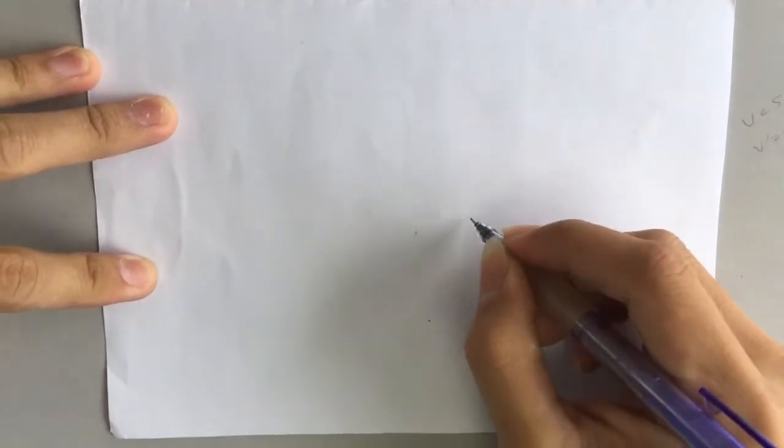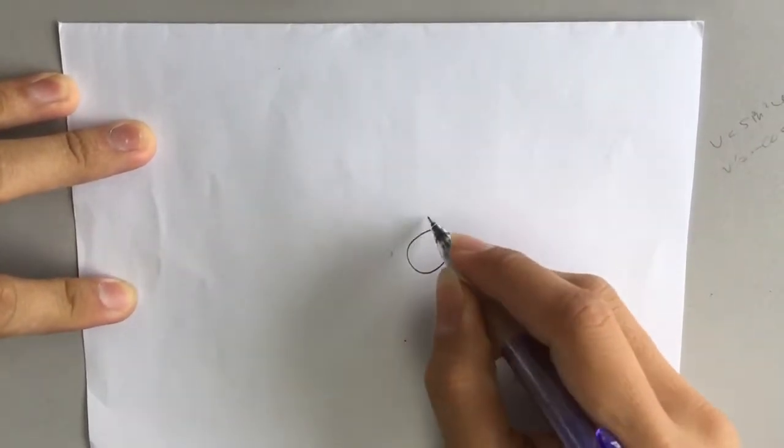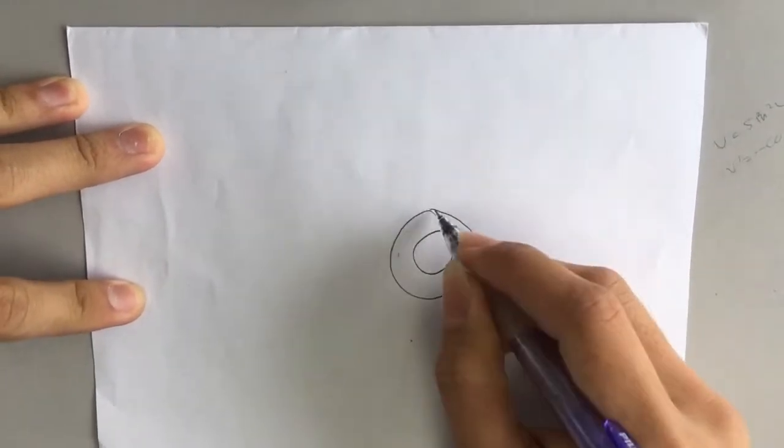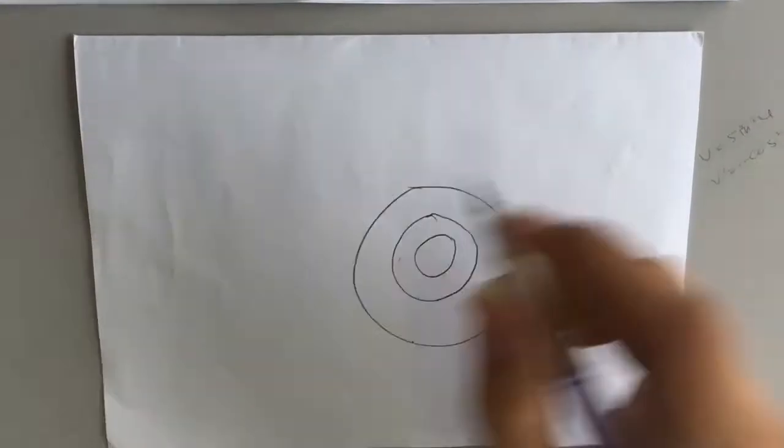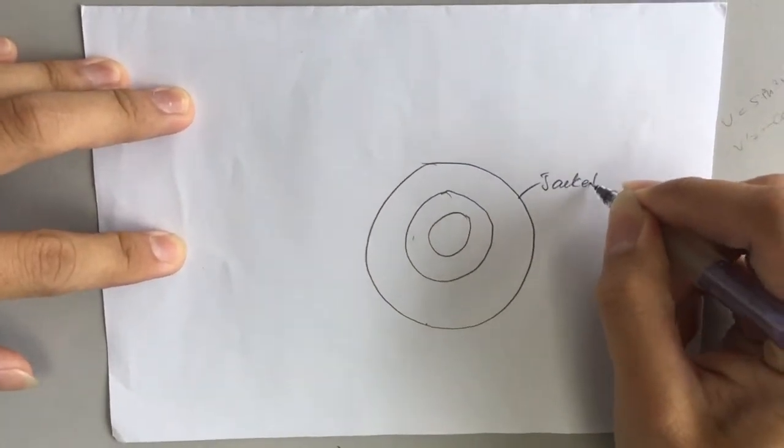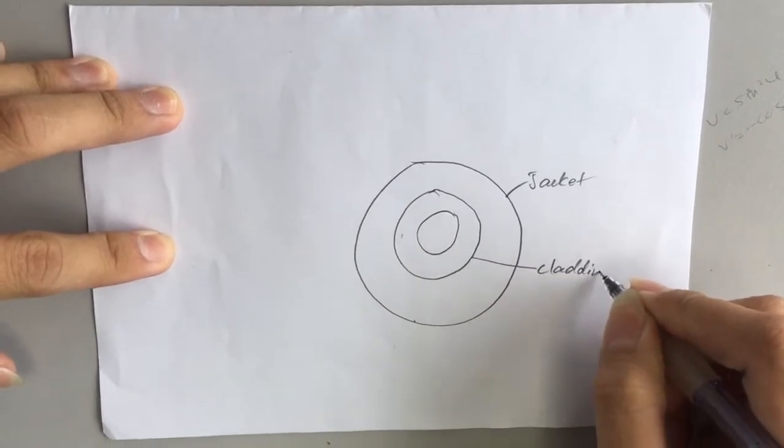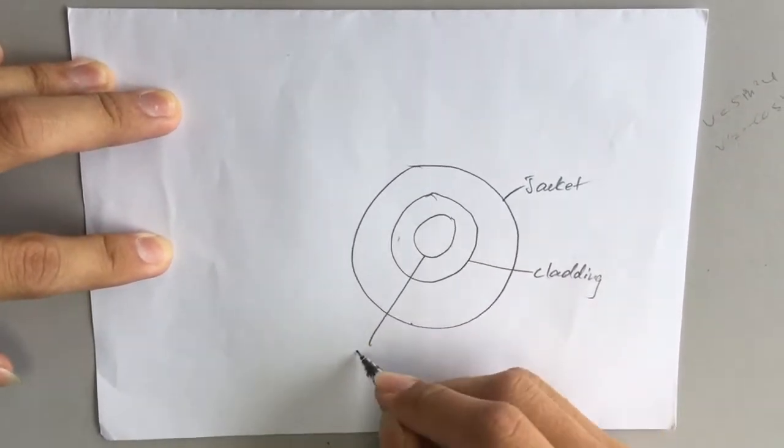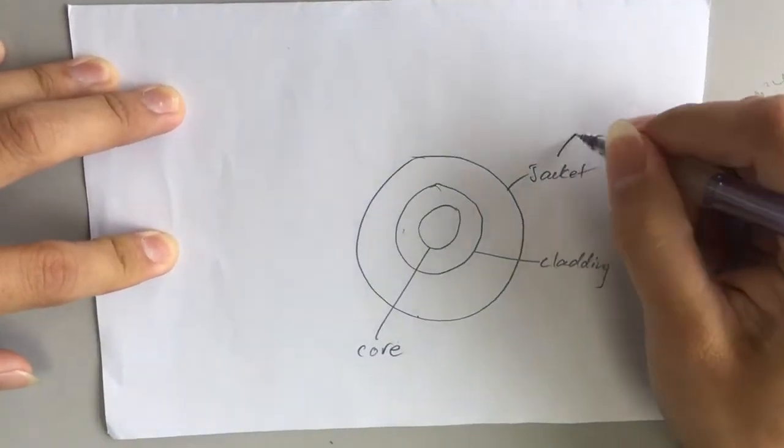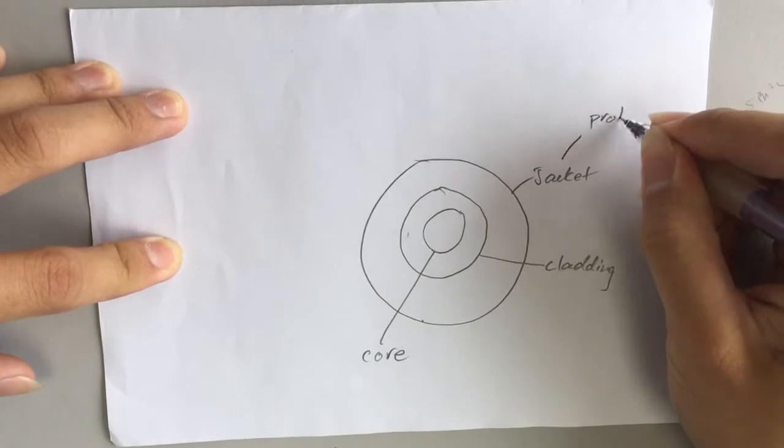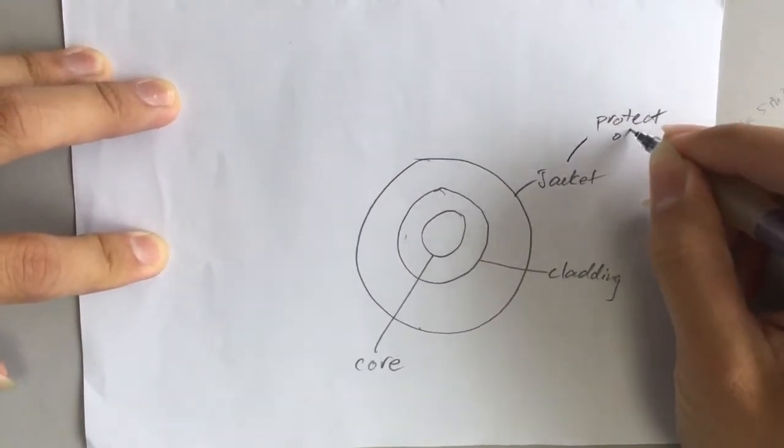So firstly we have the core, the most inner part, and then the cladding, and then the jacket. The main function of the jacket is to protect the whole fiber.